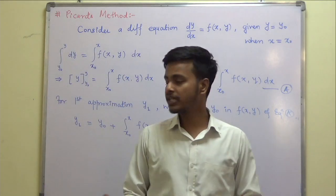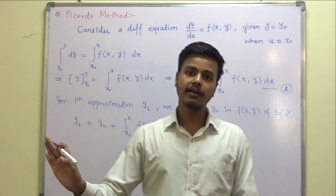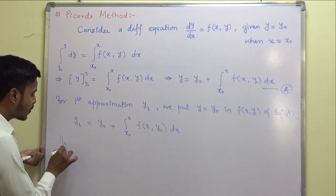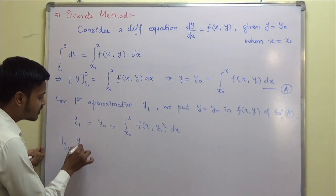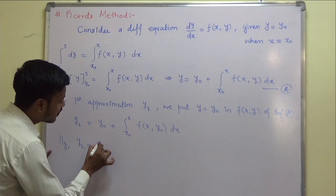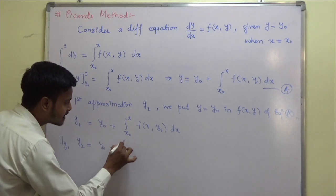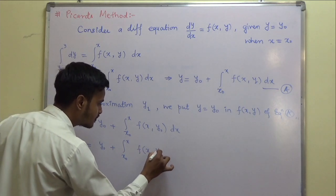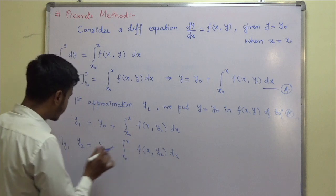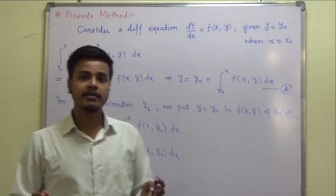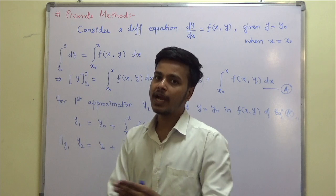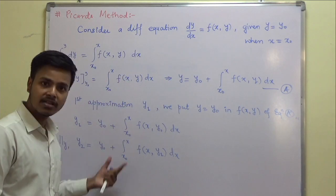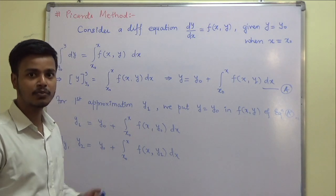This is the first approximation. Looking at it, you can guess the second approximation: y₂ = y₀ + ∫[x₀ to x] f(x, y₁) dx. Now pause the video and try to write down the general form, y_n, by looking at y₁ and y₂.